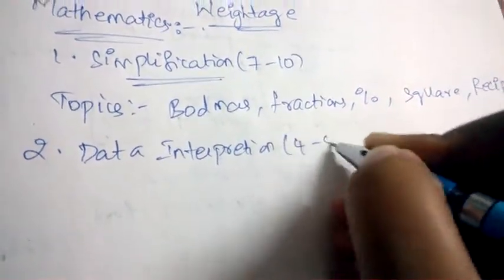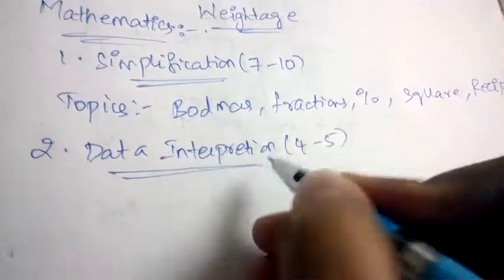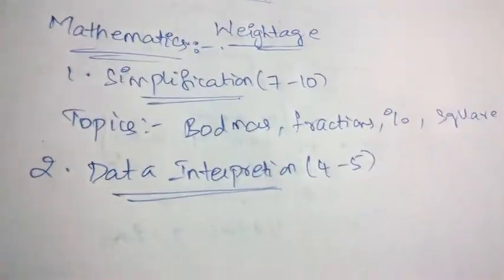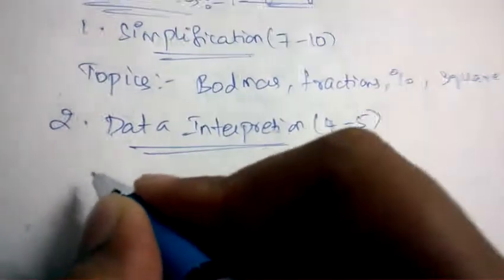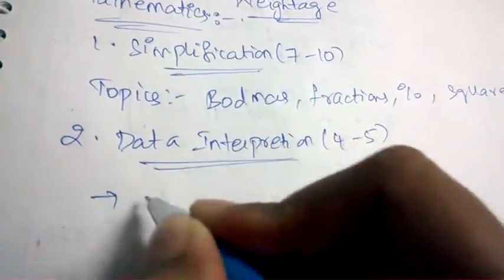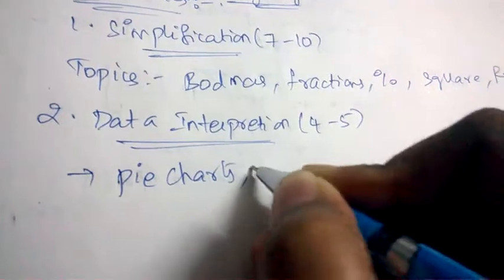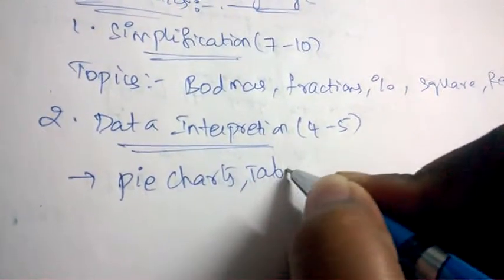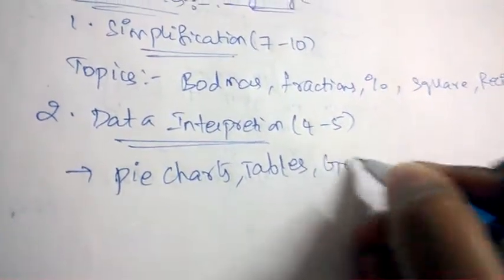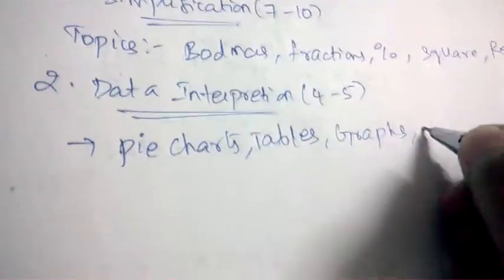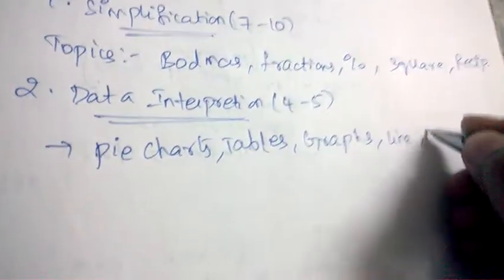From Data Interpretation, they may ask 4 to 5 questions in the exam. The topics covered under data interpretation are pie charts, tables, graphs, line graphs, and bar graphs.